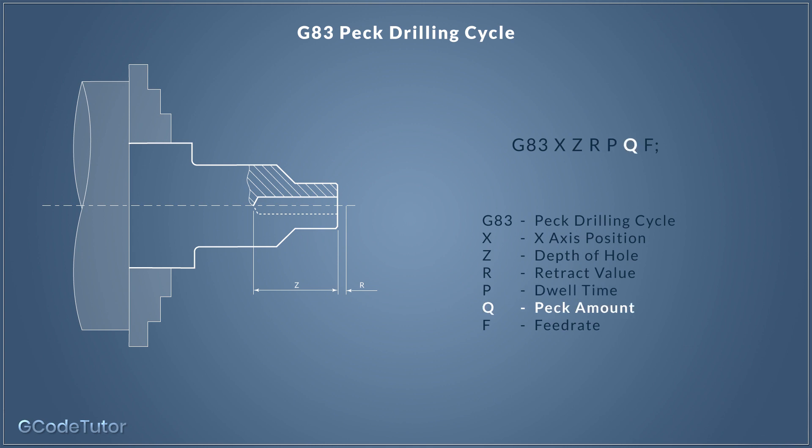Q is our peck amount — this is the distance the drill will drill and remove material before it retracts back to the retract value. This peck amount is in microns. So when we give a value to Q, it would look something like 1200 microns for 1.2 millimeters. We're not adding a decimal point here, but we do need enough zeros to express the figure in microns. Bear this in mind when programming a Q value. If we're working in imperial, this value would be in thousandths of an inch.